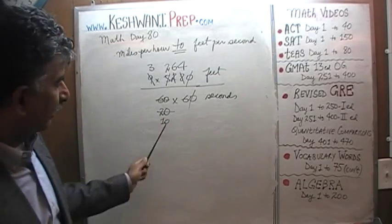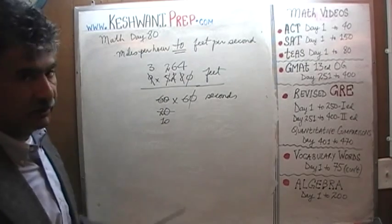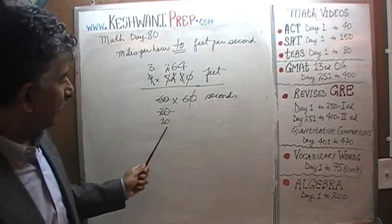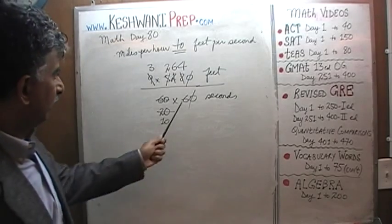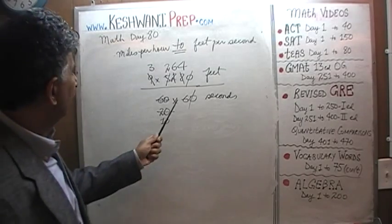You will see why it's easy to leave it alone - because at the end, dividing by 10 is much easier. We just have to put a decimal point. Let's get rid of this 6.